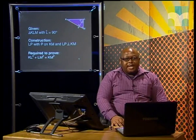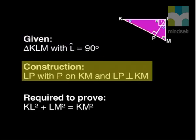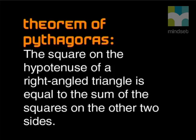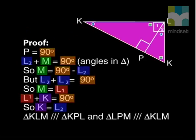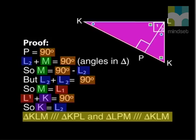Here is the whole theorem again. We are given KLM and construct LP perpendicular to KM. We want to prove Pythagoras theorem that states that in a right-angled triangle, the sum of the two shorter sides squared equals the long side squared. We work out which angles are equal in the three triangles created and then show that the big triangle is similar to both the smaller triangles.